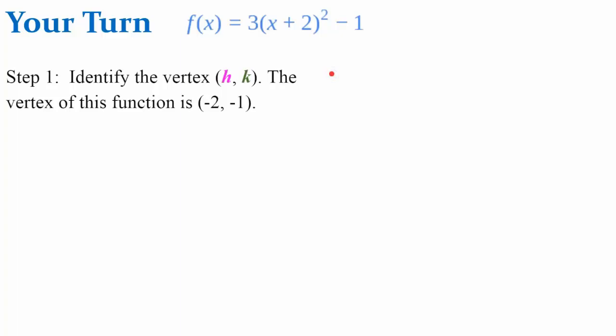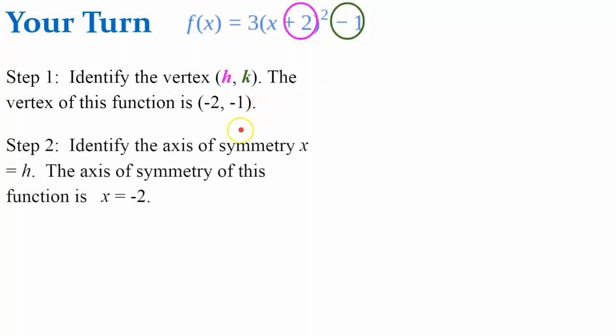Step one, you should have identified your vertex. This would be negative 2, x subtract negative 2, k value negative 1. So I have an ordered pair of (-2, -1). Now I can identify my axis of symmetry to be the line x equals negative 2.